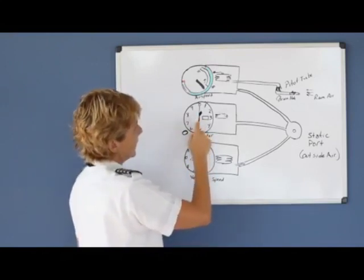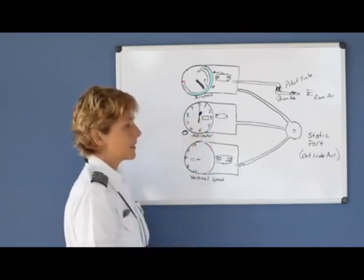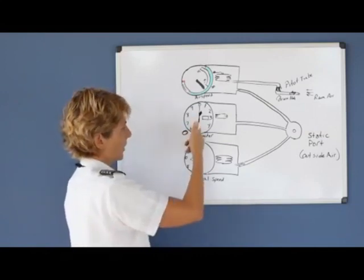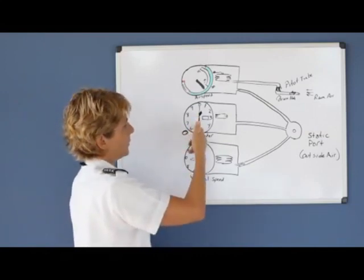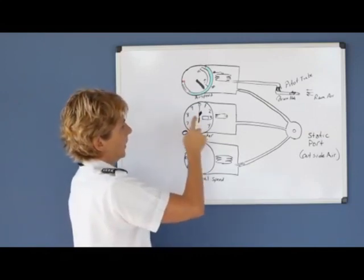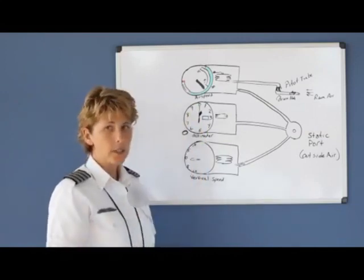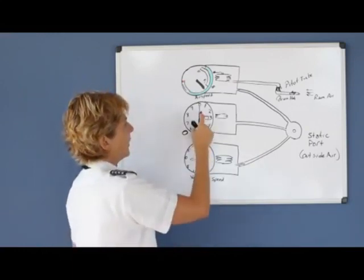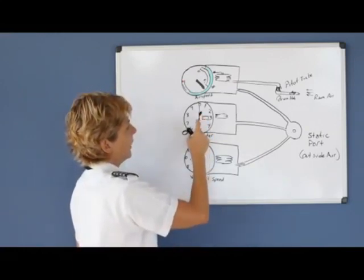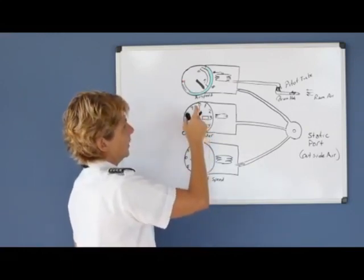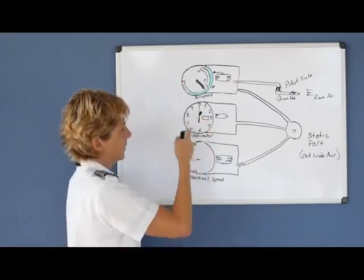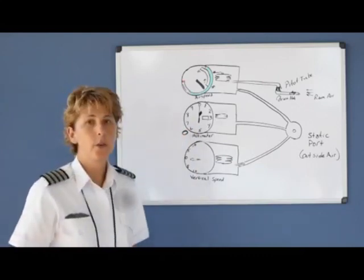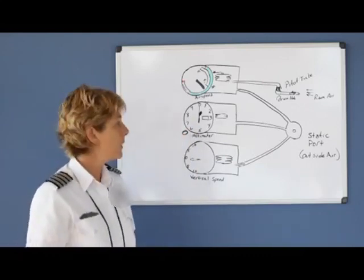The second needle indicates thousands of feet, and it's showing that you're at 5,000 feet. And then the longest skinny needle reads hundreds of feet. So we have ten-thousands, thousands, and hundreds. This example is just showing that you are at 5,000 feet.